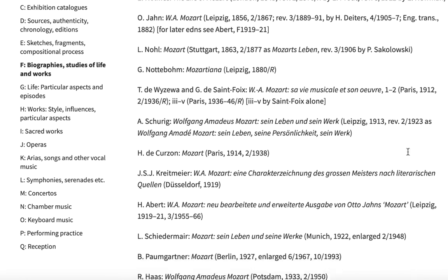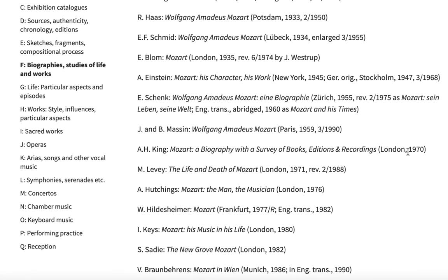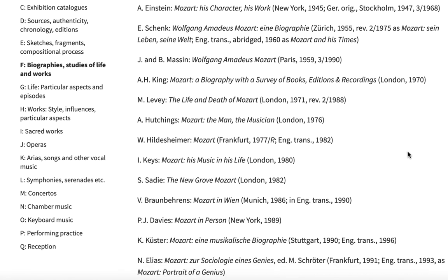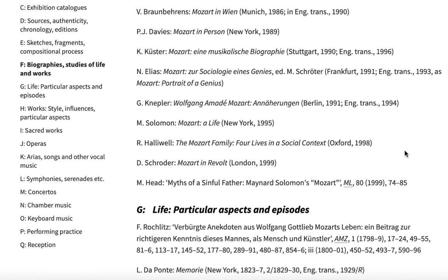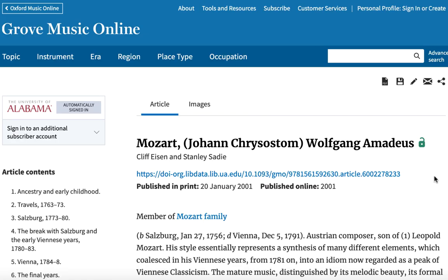Bibliographies of Grove articles can help you to jumpstart your research as they document much of the prominent scholarship on a given topic. You can use the information you find in the bibliography to search for resources in our library catalog and other databases. Likewise, the authors of Grove articles are usually music scholars with a background in that particular topic or something closely related, so you will want to keep an eye out for books and journal articles by these scholars.